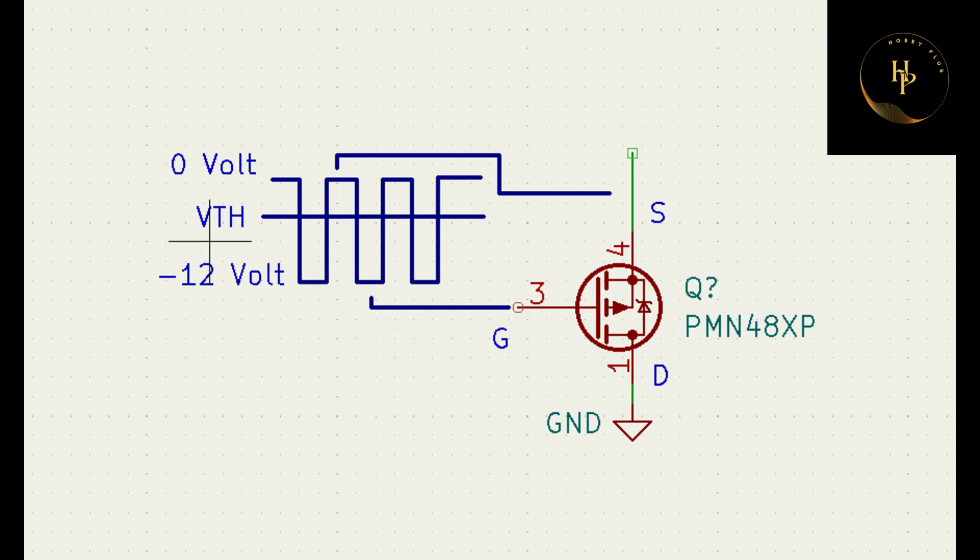Now, this is the threshold voltage. We all know that the threshold voltage is a voltage, a level of voltage which is defined when the MOSFET is on and when the MOSFET is off.